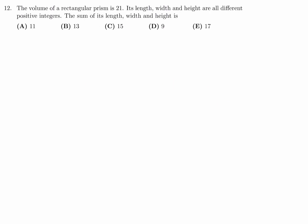The volume of a rectangular prism is 21. Its length, width, and height are all different positive integers. The sum of its length, width, and height is? Alright, well, the volume is 21 and that's length times width times height. 21 can be broken up into 3 times 7. Well, it would be nice if there were 3 numbers. There's only 2 prime factors here. Well, that's not a big problem. I can just stick a 1.